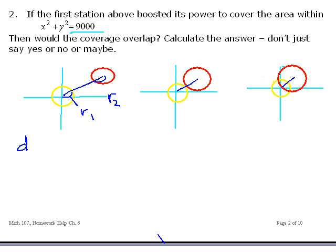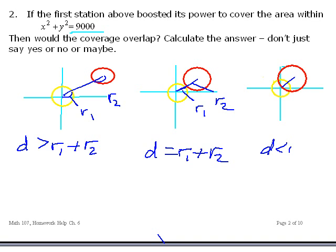So in this case, the distance is greater than R1 plus R2 because that distance included the first broadcast region, then you have some dead space, and then the second one. And that made the distance greater than the sum. Now in this case, here's R1, here's R2, and it's exactly equal. And in the second case, the distance is less than R1 plus R2.